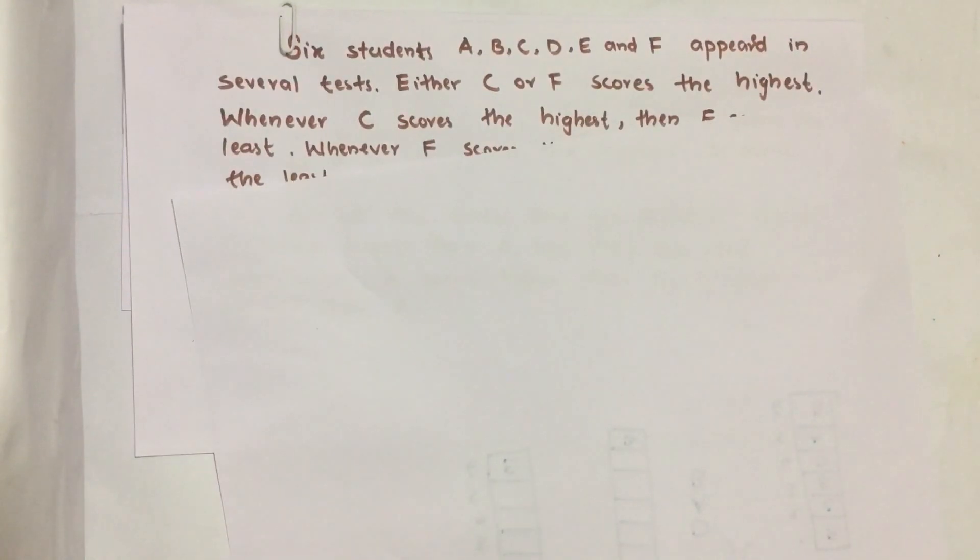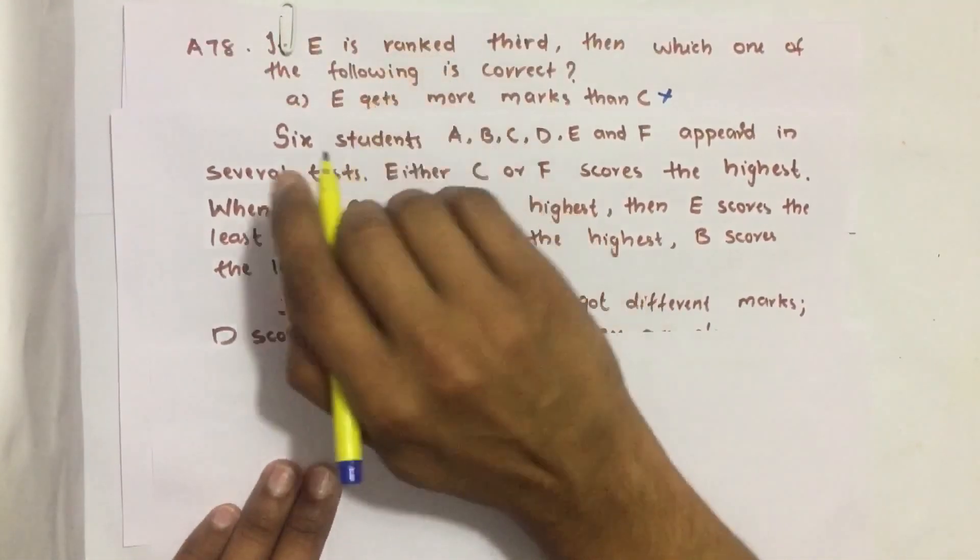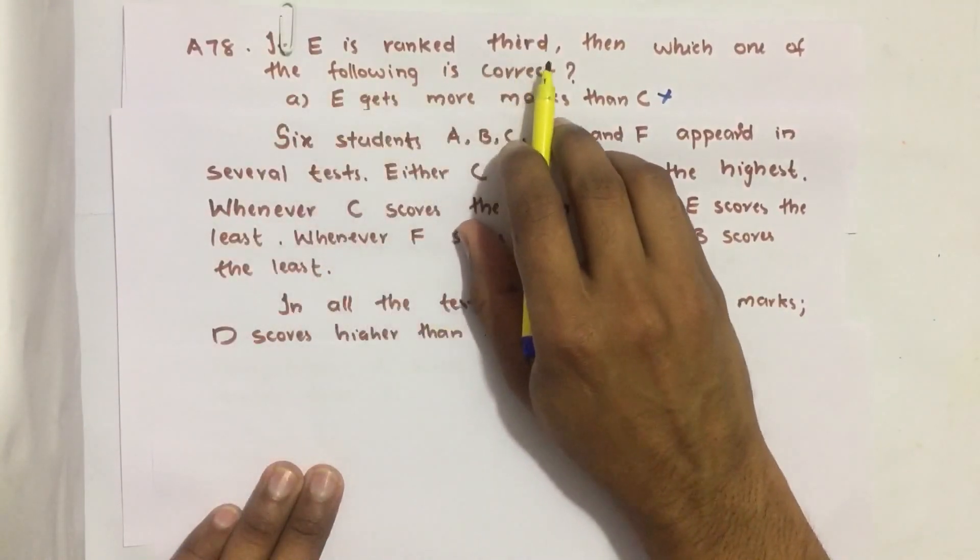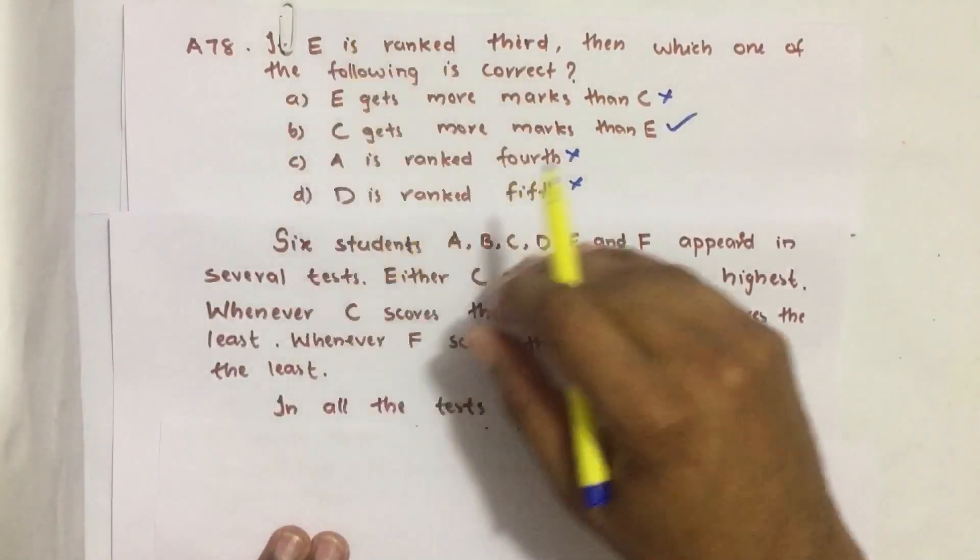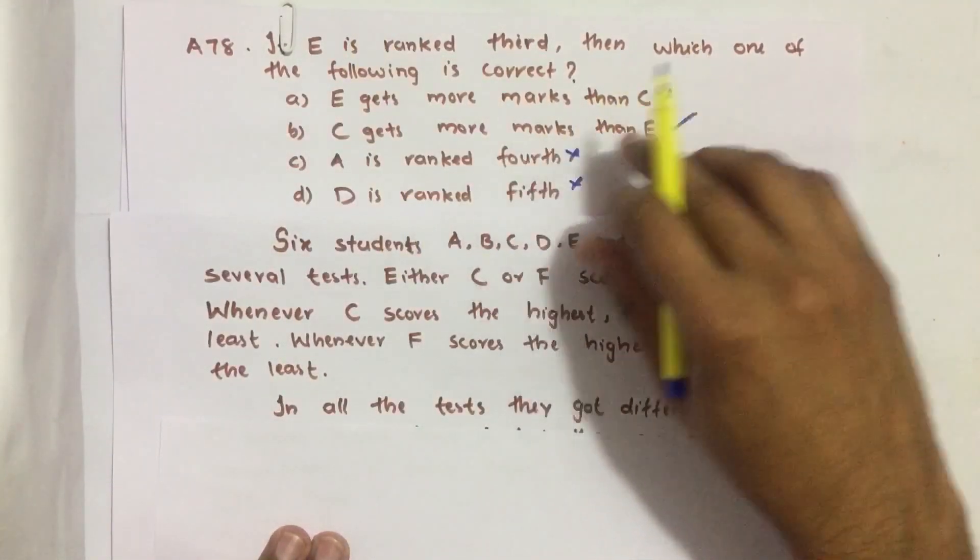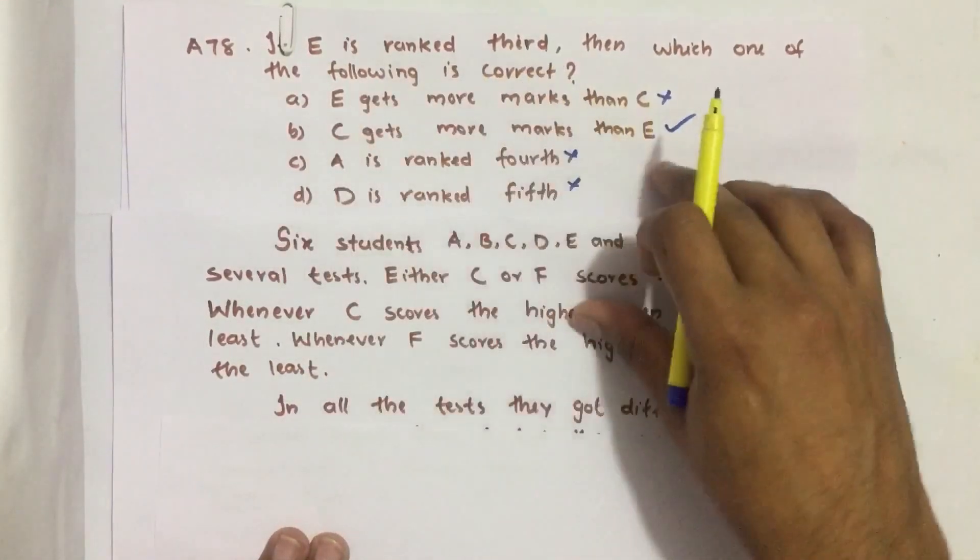So here we have, and followed by there is a question. If E is ranked third, then which one of the following is correct? We have four options here, statements here. We have to find which statement is correct if E is ranked third.